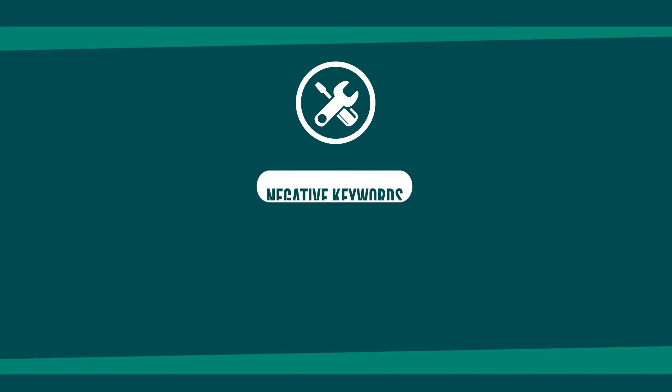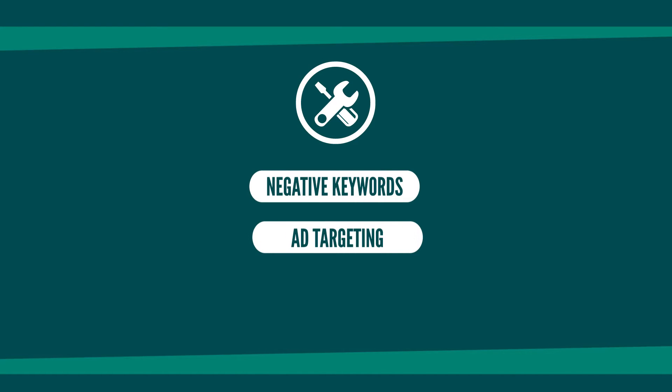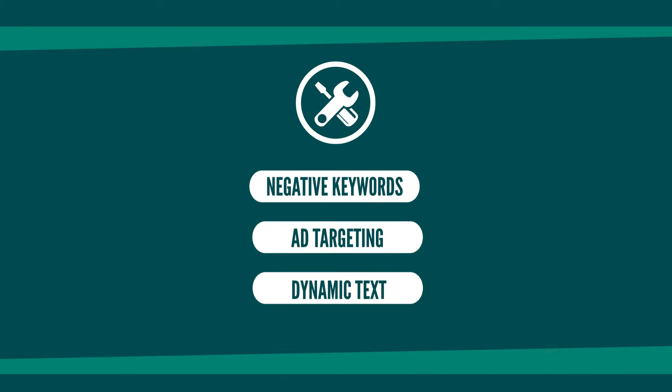There are three simple but powerful tools you can use to improve your campaigns: negative keywords, ad targeting, and dynamic text. Let's take a quick look at each one.